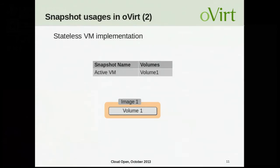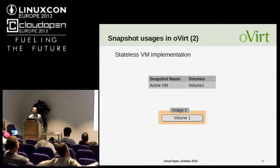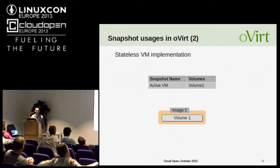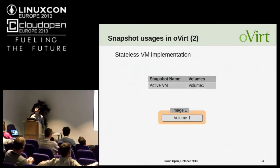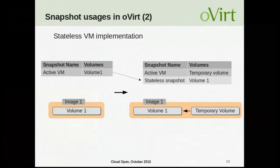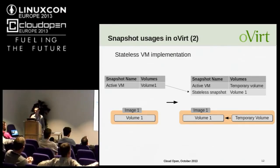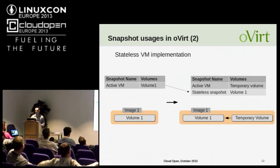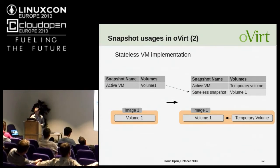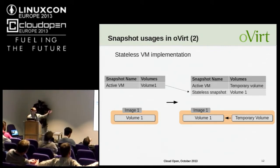We also use snapshots in oVirt to implement stateless VMs. A stateless VM always starts with the same state, regardless of changes made on a previous run. We add a new temporary volume for each disk, clone the active VM entry to become a stateless snapshot, and associate the newly added volumes with the active VM entry. When the VM is powered off, we revert to the state it was in before we ran it.